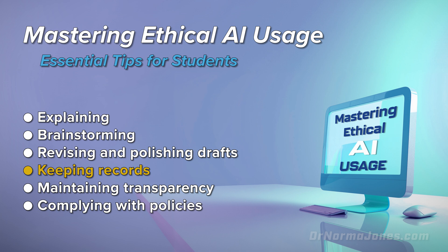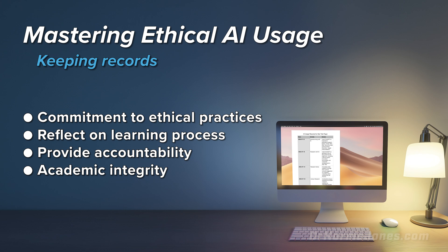Now that we've covered revising and polishing drafts, next, let's consider keeping records of your AI usage. First, keeping detailed records of how you use AI demonstrates your commitment to ethical practices. Second, record keeping helps you reflect on your learning process. By noting down how you have used AI tools, you can see which strategies were most effective and where you might need to improve. For example, if you used an AI tool to brainstorm ideas for a paper, you can track how those ideas developed and which ones led to successful outcomes. Third, records provide accountability. If there are ever questions about the originality or authenticity of your work, having a detailed log of your AI usage can help clarify how you developed your assignments. This can be particularly important if your institution has strict policies on AI usage.